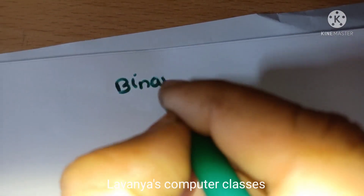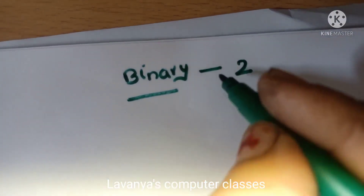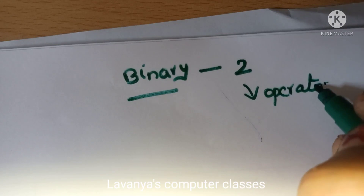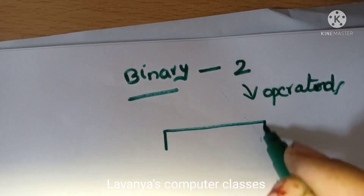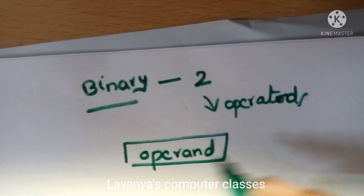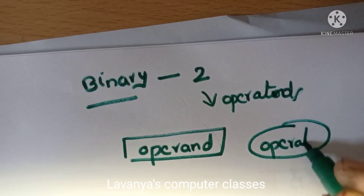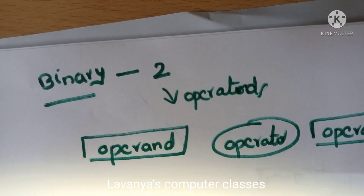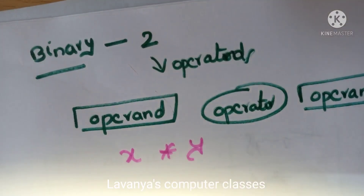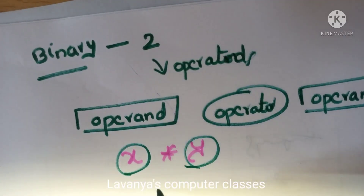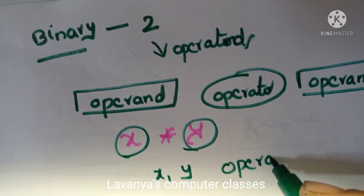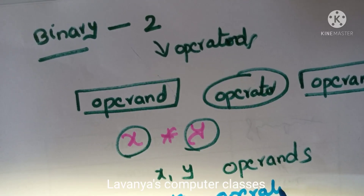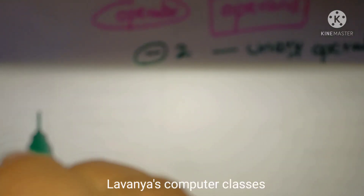Now we go for binary operator. Binary means two — any operator working on minimum two operands is called a binary operator. The diagrammatic representation shows: operand, operator, operand. For example, X into Y: X and Y are both operands, and multiplication (into) is the operator performing multiplication of two values. That is called a binary operator.